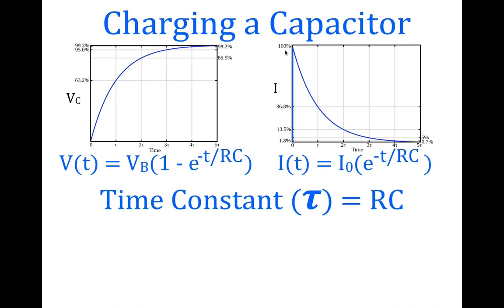For the current it's basically the same thing, except the current is decreasing. After one time constant the current through the circuit is 36.8% of the maximum; at two it's 13.5%, three it's 5%, four it's 1.8%, and at five time constants it's 0.7%. This applies to any combination of resistor and capacitor because the graph is expressed in time constants and percentages.